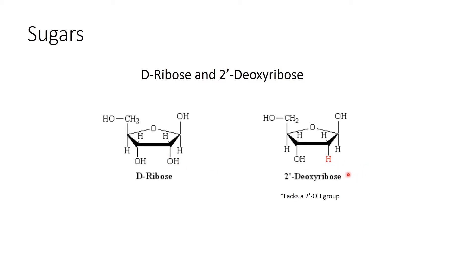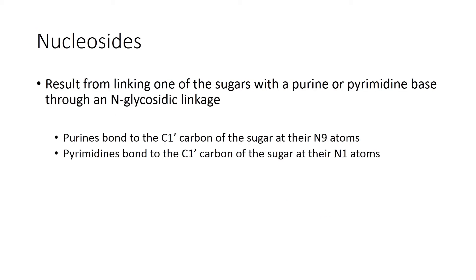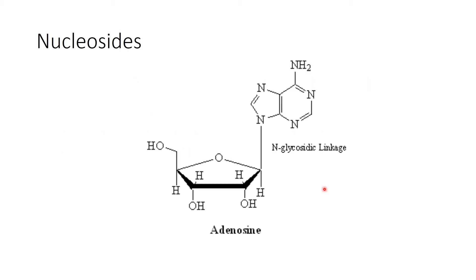Next, what is a nucleoside? A nucleoside results from linking one of the sugars with the purine or pyrimidine base through an N-glycosidic linkage. Purines are bound to the C1 carbon of the sugar at their N9 atoms, and these are the structures of nucleosides.